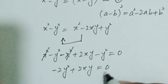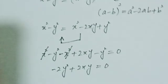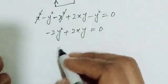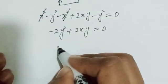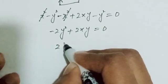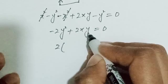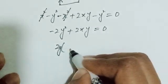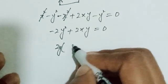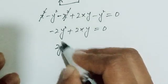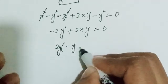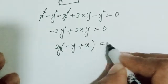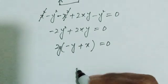After canceling x squared terms, we are left with minus y squared minus y squared plus 2xy, which gives minus 2y squared plus 2xy equals zero. Here I can take 2 and y as common factors.